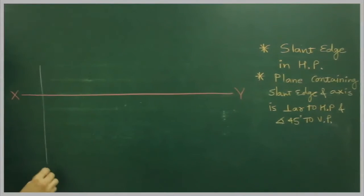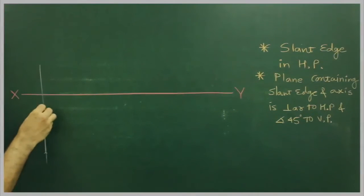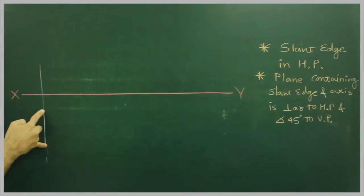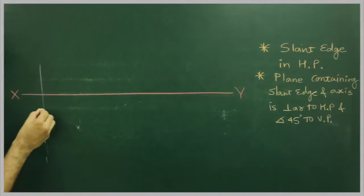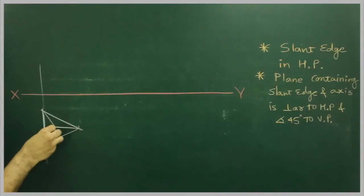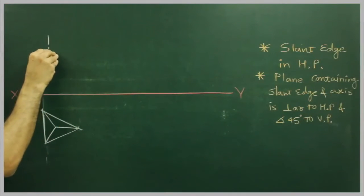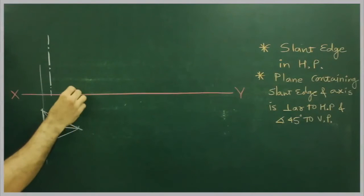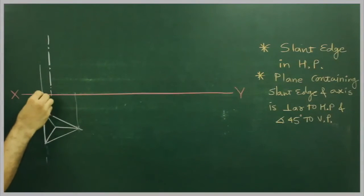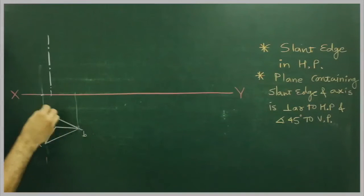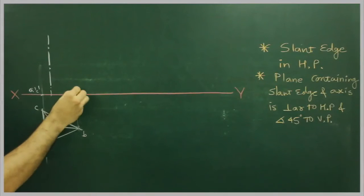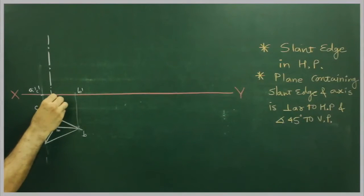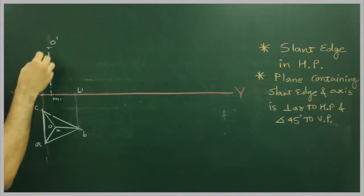So what we have to do: first we have to draw a triangular pyramid. First we will draw an equilateral triangle. This is A, B, C, O, N. This is A dash, C dash, B dash, O dash.